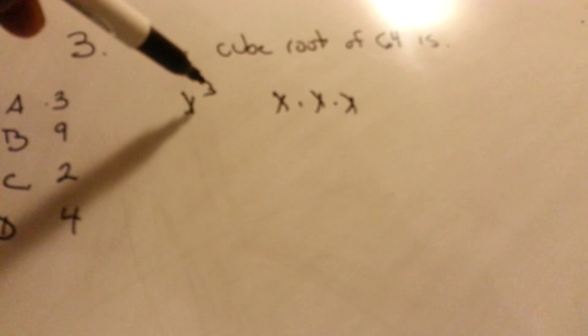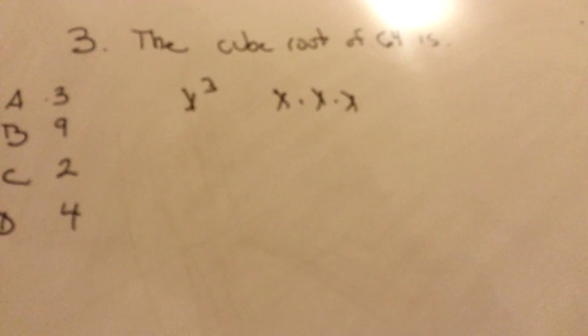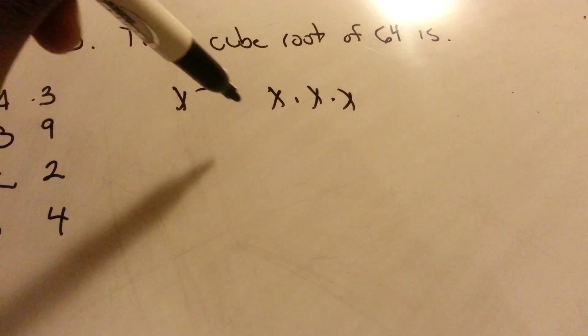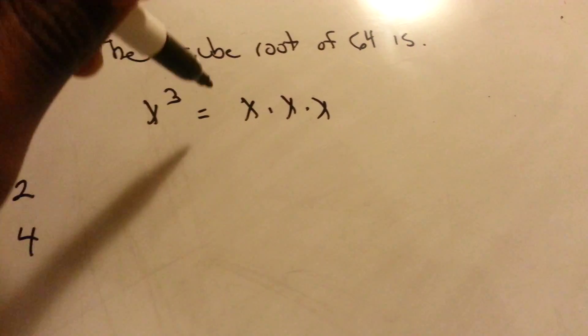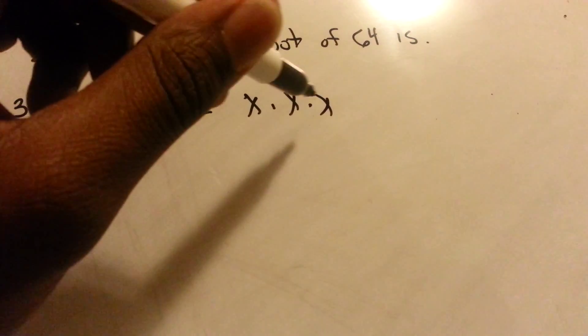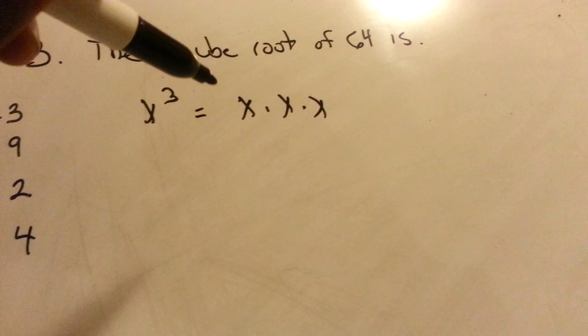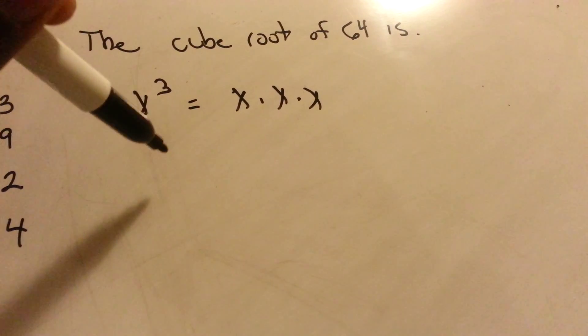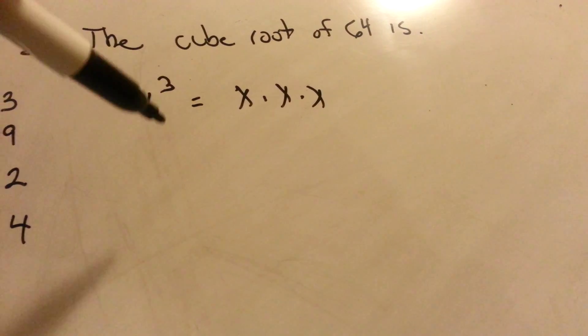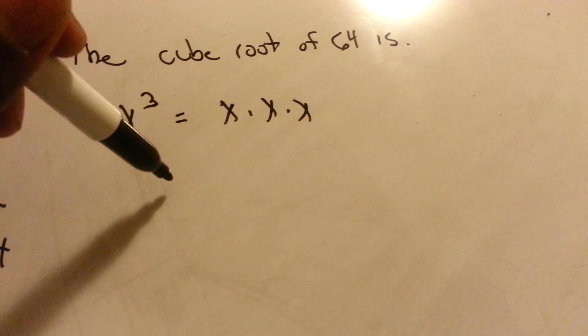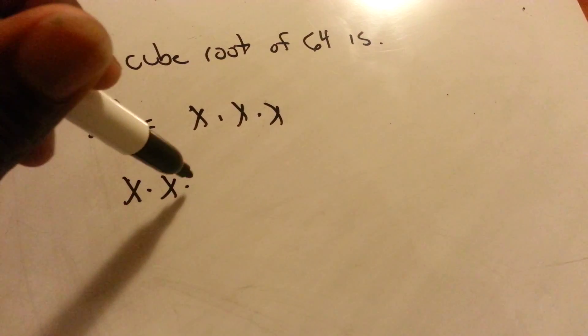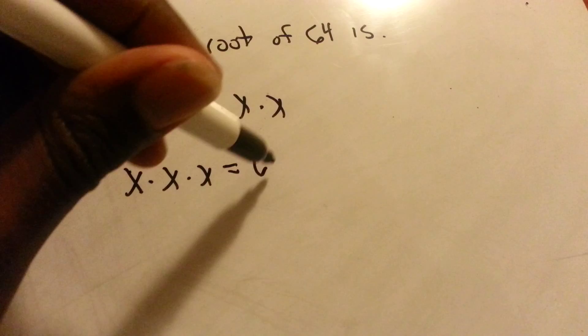X cubed equals X times X times X. So the cube root is trying to figure out what times itself three times equals that number. They want to know what times what times what equals 64.